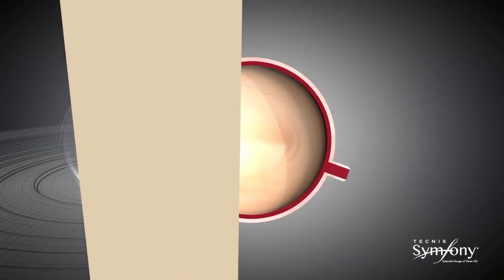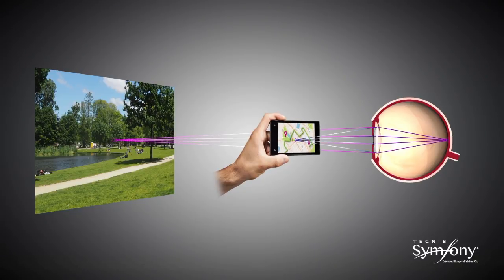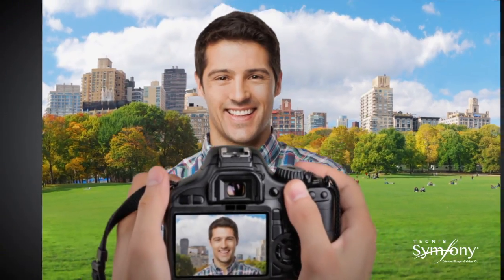With a multifocal lens, you can think of it as a bifocal where there's a nice sharp image from distance and a nice sharp image from up close, but in between maybe a bit blurry, and there's some nighttime issues with glare and halos.